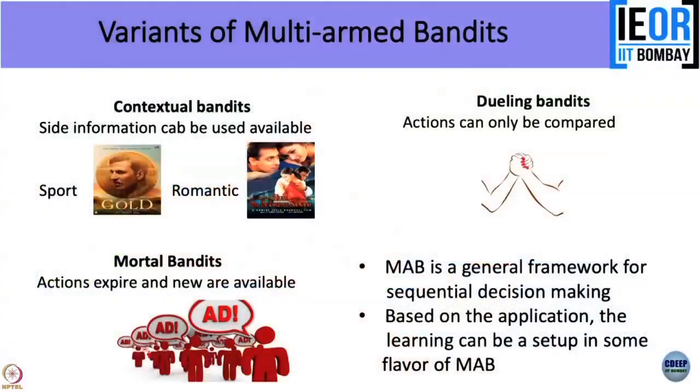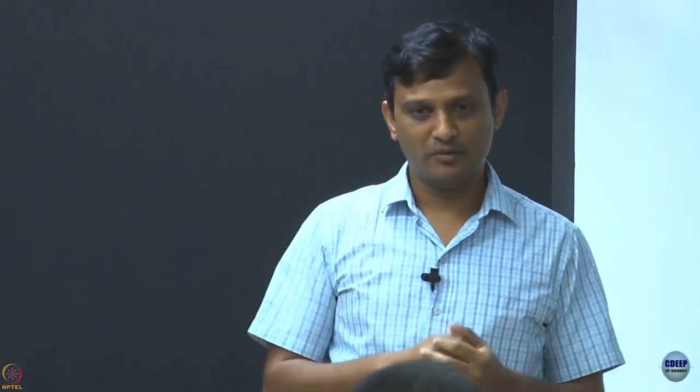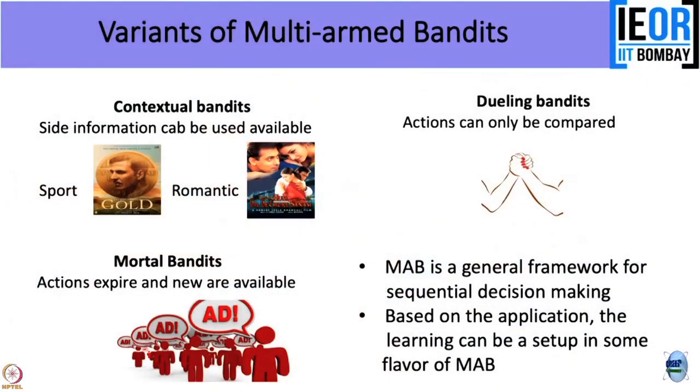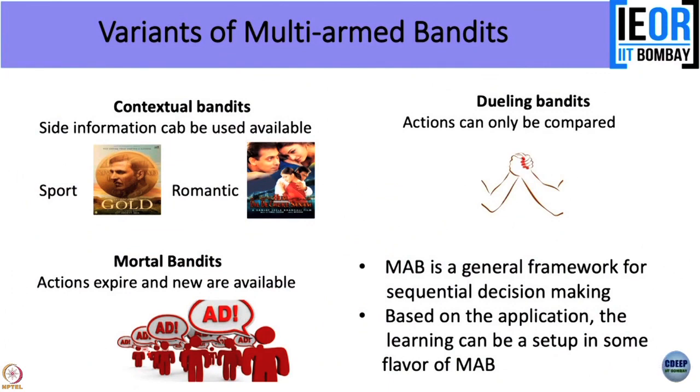Each one you can think of modeling differently, or you can come up with variants. If you are interested in not just one location but all possibilities, you can think of the arms as all possible combinations and expand your problem accordingly. There are many, many variants possible in this very active research area.